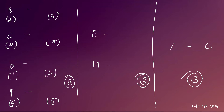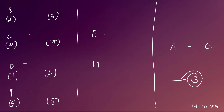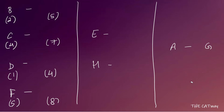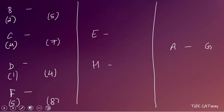The minimum total goals required to win the tournament is nine — three per round across three rounds. We can see that A has scored a total of only eight goals in the tournament, so A cannot win the tournament. Therefore, G is going to win the tournament.